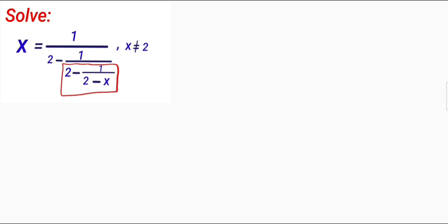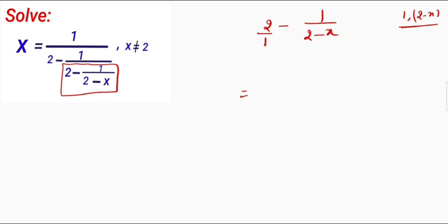So let me write this here. This part is 2 minus 1 divided by 2 minus x. So this 2 I can write as 2 divided by 1. Now the next step is I have to take the LCM of 1 and 2 minus x. The LCM of 1 and 2 minus x is 2 minus x.